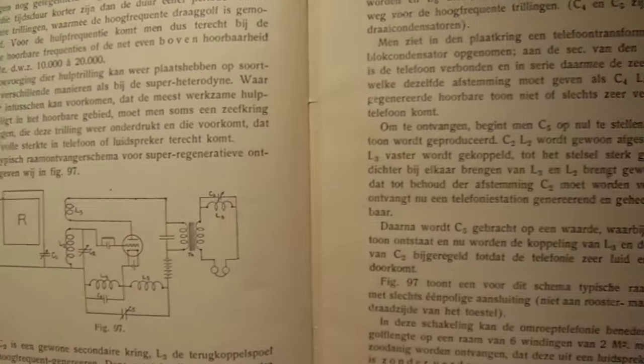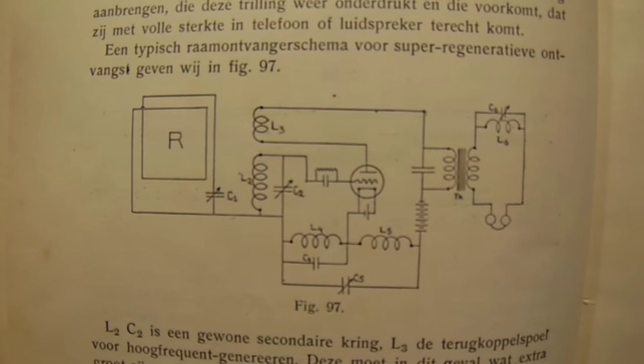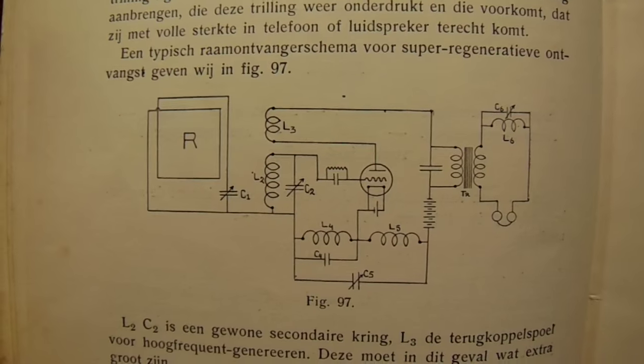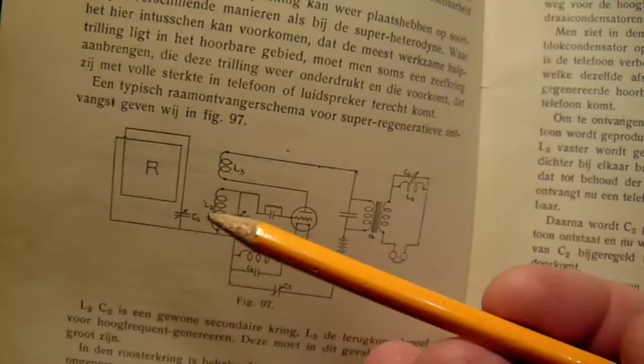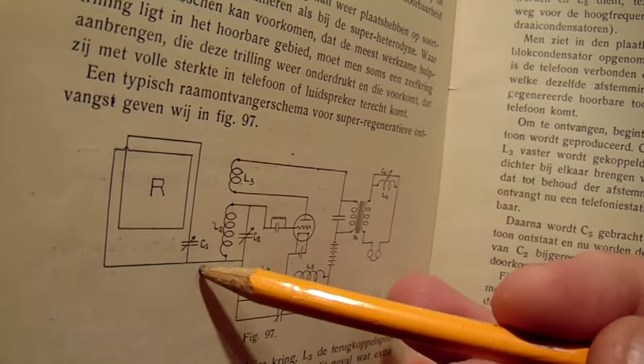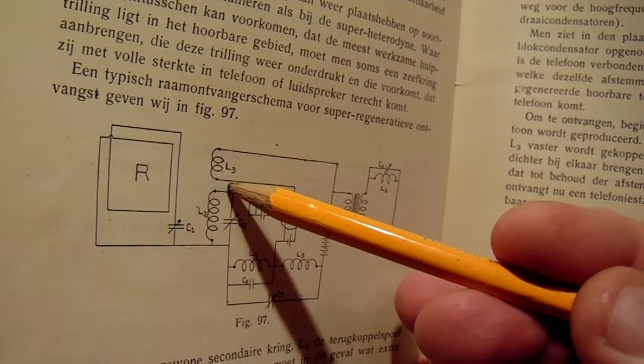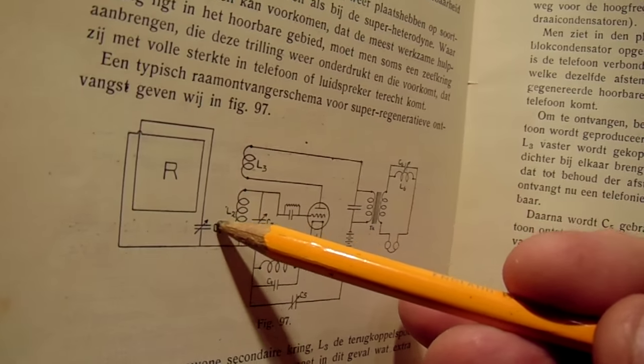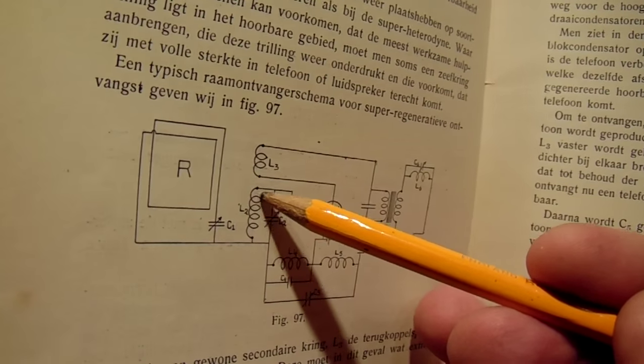Here we see, for instance, such a super regenerative radio from 1930. It's a big problem, because we always have to keep these two coils very critically coupled, so that it almost generates, and that differs with the frequency. The coupling differs with the frequency.